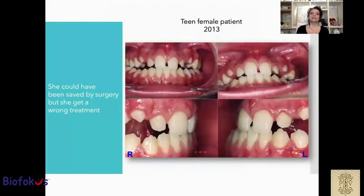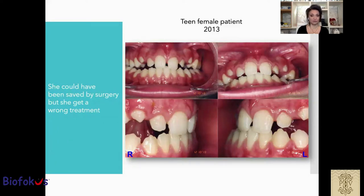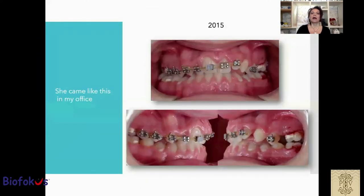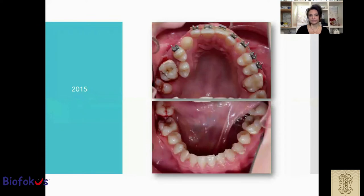I will show you a teen female patient. These are initial pictures made by another clinic, another orthodontist, in 2013. She started treatment at the time, but she received a wrong treatment plan — a wrong diagnosis — and she could have been saved from surgery, but she received the wrong treatment. Unfortunately, she had a low tongue posture and a big tongue. In 2015, she came to my office like this.